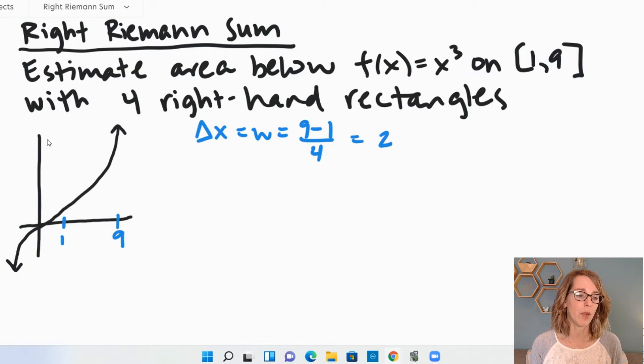So this tells me that I'm going to divide this into intervals of 2. So I'm going to go 1, 3, 5, 7, and 9.